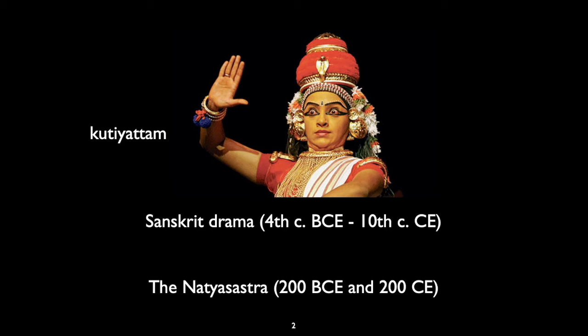Even though there are no surviving examples of Sanskrit drama, there is one of the oldest theater forms in India called Kutiyattam, and it is a kind of remnant of that original Sanskrit drama. It survived from a time when it was still directly influenced by Sanskrit drama, but it has gone through many changes and only distantly resembles what the Natya Sastra theater must have looked like.